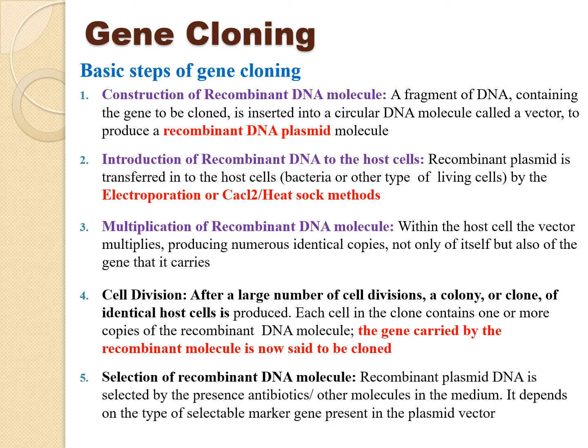The second step is the introduction of recombinant DNA to a host cell. Once we have the recombinant DNA from the first step, we insert it into a host cell, which is a normal bacterium, with the help of two processes: electroporation and CaCl2 or heat shock methods. These will be explained in detail in the upcoming slides.